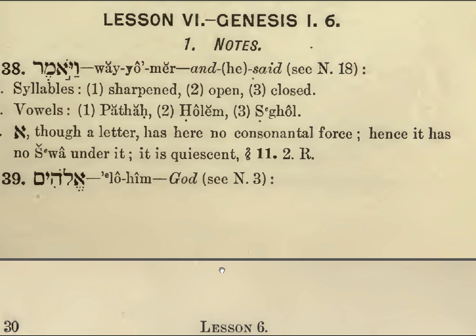Lesson six. VAYYOMER — and he said. The first syllable is what we call a sharp syllable because it's a double consonant. VAYYOMER: the first syllable is closed, the second one is open JO, and the last one is closed MER.